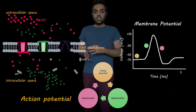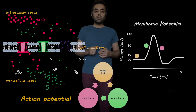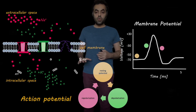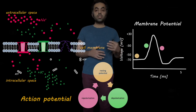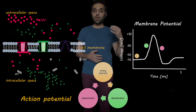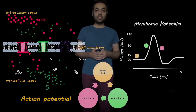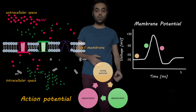An action potential has three different phases as we discussed in this video. There is a resting potential, and then depolarization, during which the membrane potential rises from the resting potential to somewhere around plus 30 millivolts. And then repolarization, where the membrane potential goes from plus 30 to a little bit lower than minus 70 millivolts.